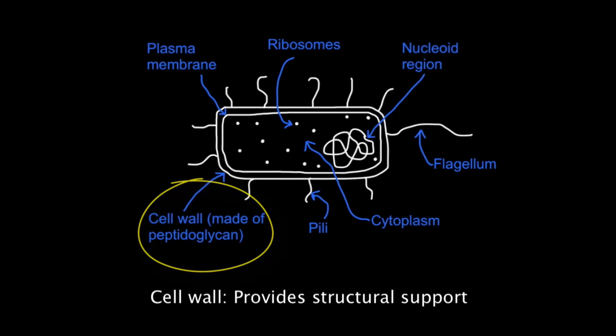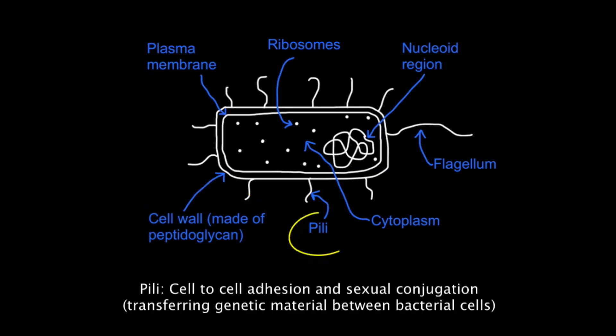This maintains structural support for the cell. Pili are used for adhesion to other cells or sometimes for sexual conjugation.